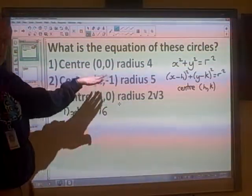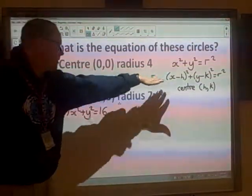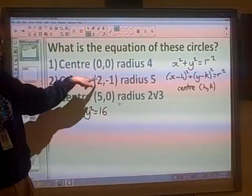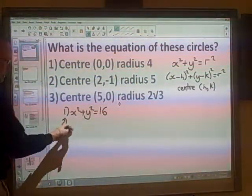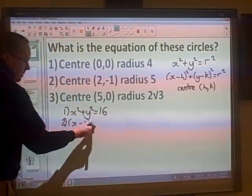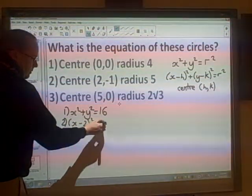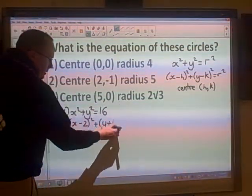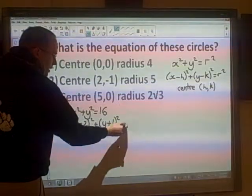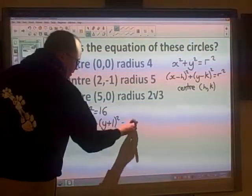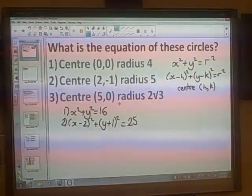Now, for the second one, we can see the center's not (0,0). So we're going to use this formula here, and we're just going to plug in the opposite. So where it says 2, I'm going to plug in negative 2. And then for the second one, where it says negative 1, I'm going to put positive 1. That radius is 5, so 5² is 25.